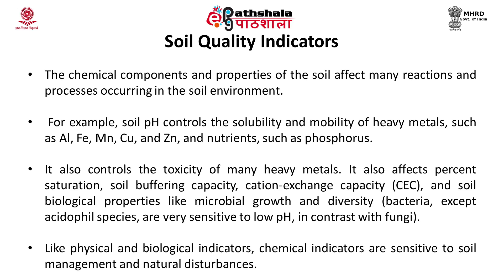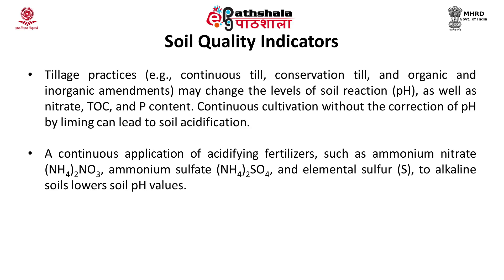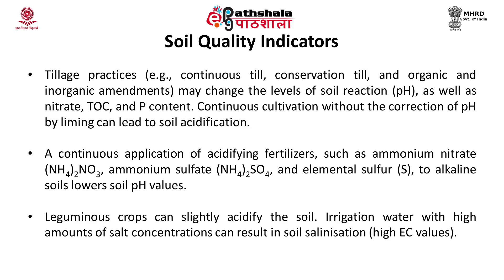Like physical and biological indicators, chemical indicators are sensitive to soil management and natural disturbances. Tillage practices may change the level of soil reactions as well as nitrate and phosphorus content. Continuous cultivation without the correction of pH by liming can lead to soil acidification. A continuous application of acidifying fertilizers such as ammonium nitrate, ammonium sulphate and elemental sulfur to alkaline soil lowers the soil pH values. Leguminous crops can slightly acidify the soil. Irrigation water with high salt concentration can result in salinization.